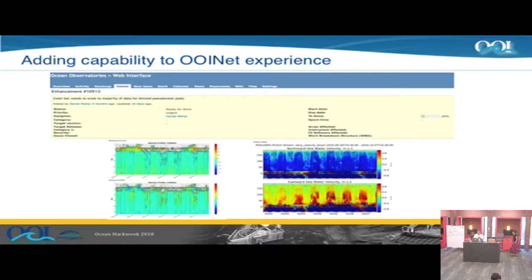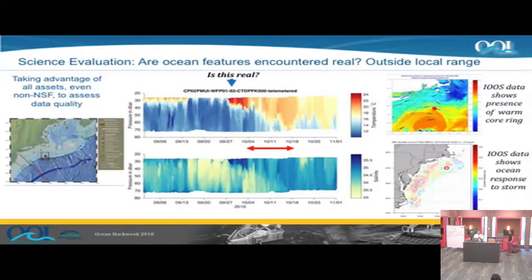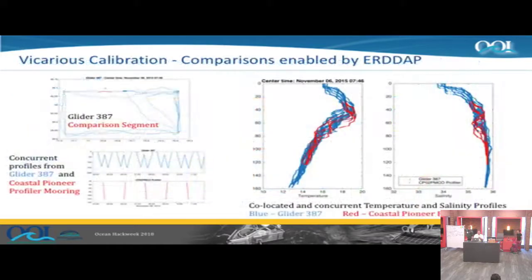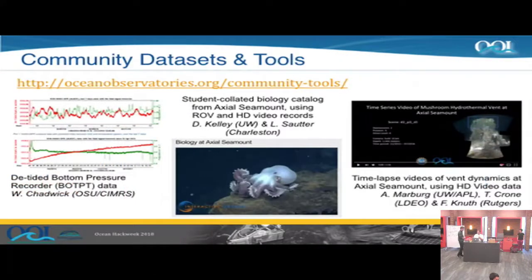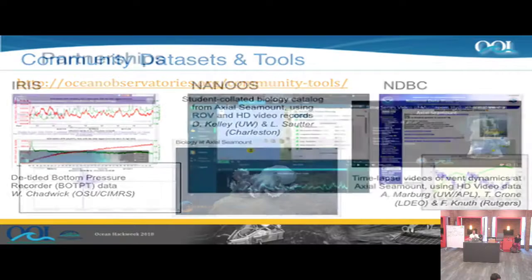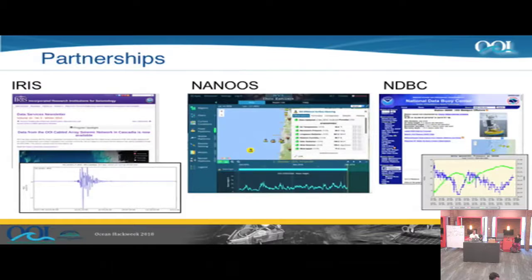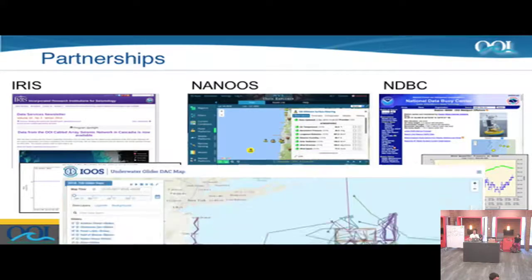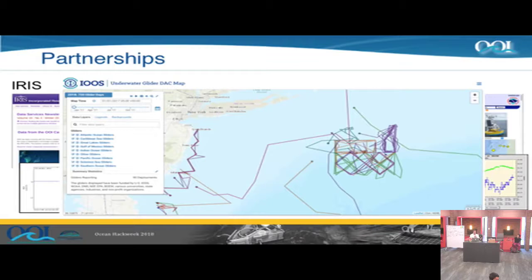The data team has been part of adding capability to the system, doing additional science evaluation, looking at environmental variables, and vicarious calibration using glider flybys. Community datasets and tools can be found on oceanobservatories.org — people have submitted interesting work done with OOI data. OOI also has partnerships with IRIS, NANOOS, and NEBC, where OOI data flows into those systems and can be accessed there.